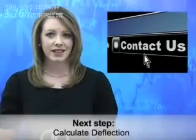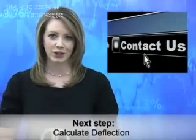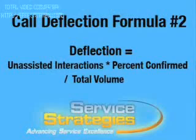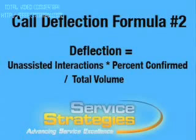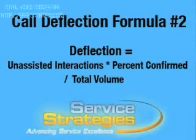Once the unassisted interactions are determined, you'll be able to evaluate deflection. Deflection can be found by multiplying the unassisted interactions by the number of people who confirmed finding what they needed on your website, usually found via post-session surveys. Then you'll divide that number by the total volume of all service requests, which would include both phone and web cases generated.